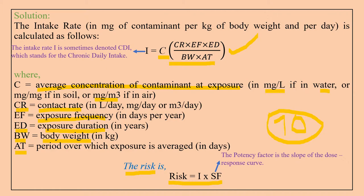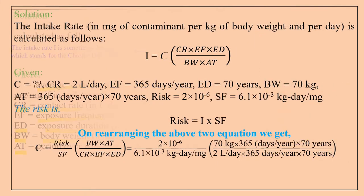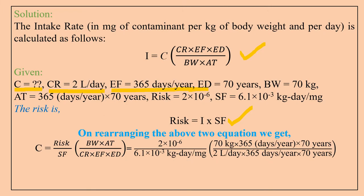We have our formula to use. Given values: water intake CR = 2 L per day, EF (exposure frequency) = daily, which is considered lifetime. Exposure duration ED and average lifetime AT = 70 years. Body weight BW = 70 kg. AT = 365 days per year × 70 years. Risk given = 2 into 10 to the power minus 6. Potency factor SF = 6.1 into 10 to the power minus 3 kg/mg.